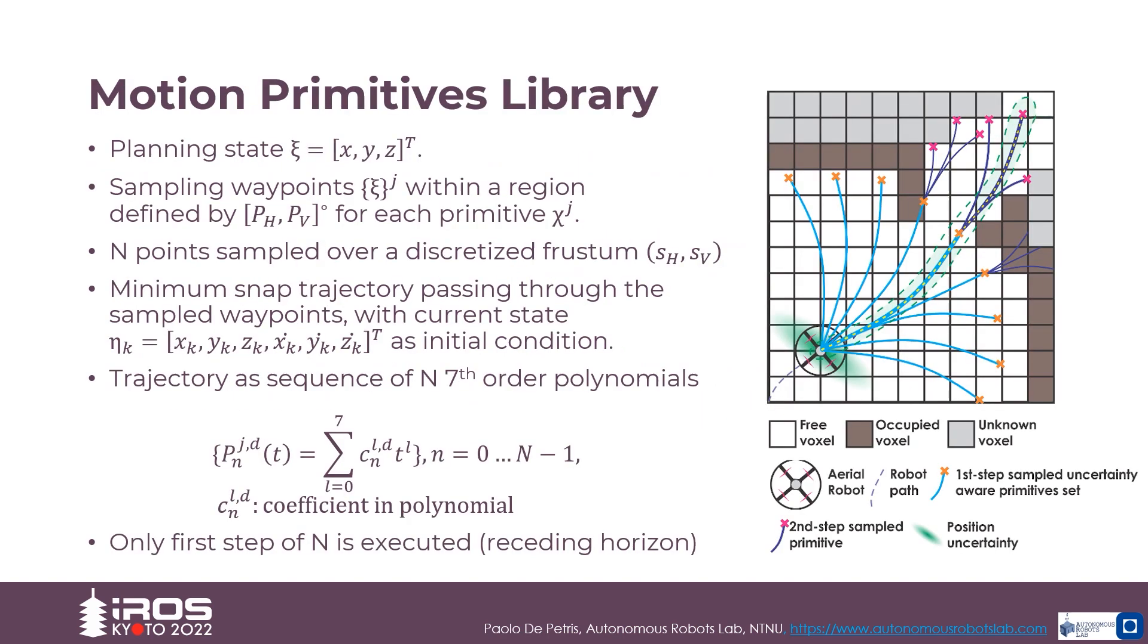As depicted in the figure, the proposed RAM planner performs planning based on motion primitives that respect the dynamics of the multirotor map and operates in a receding horizon fashion. Using the 3D position as the planning state, at every iteration the method builds a library of motion primitives by sampling a set of waypoints for each primitive.